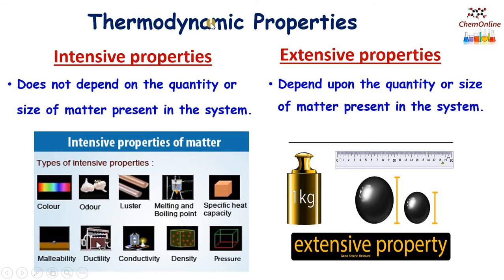Thermodynamic properties are classified into two types: intensive properties and extensive properties. Intensive properties are those that do not depend upon the quantity or size of matter present in the system — they are independent of the amount of matter. Examples include color, odor, melting point, boiling point, density, pressure, conductivity, etc. Such properties that do not depend upon the quantity or size of matter are called intensive properties.